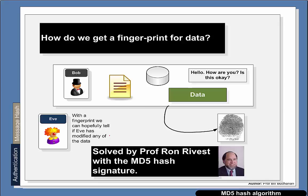Hashing gets around the problem of how do we fingerprint our data. We can have lots of data, a little bit of data, we can have files and so on. We want to set up some method that allows us to take a little fingerprint of our data and to make sure that we know if the data has been changed or not.